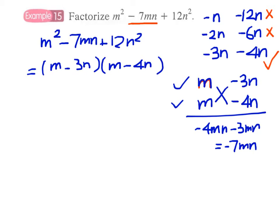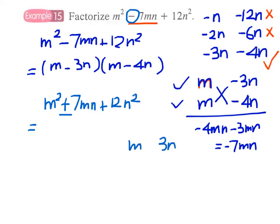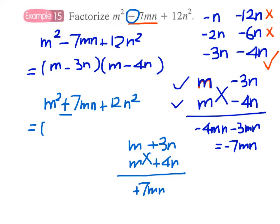We can go a little further: what if we change the sign of the middle term? The expression becomes m² + 7mn + 12n². Since only the middle term is involved, we have plus 7mn. The change is straightforward — we simply change minus 3n and minus 4n to plus 3n and plus 4n, giving us plus 7mn. Therefore the answer is (m + 3n)(m + 4n).